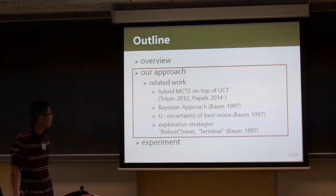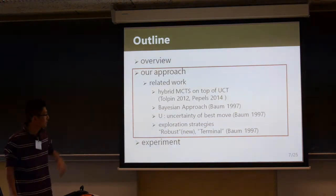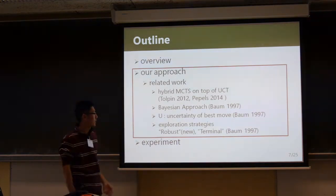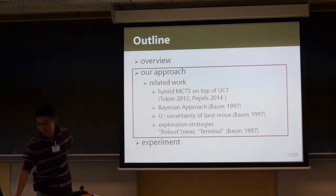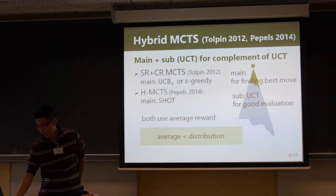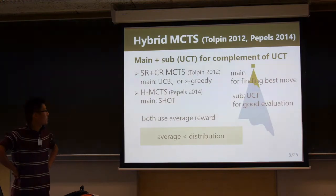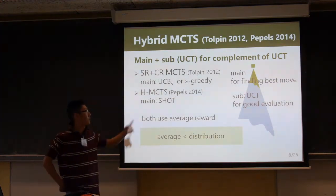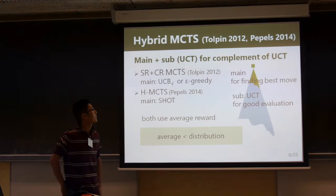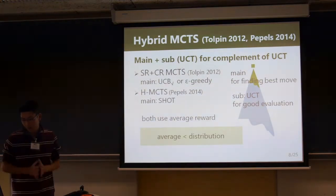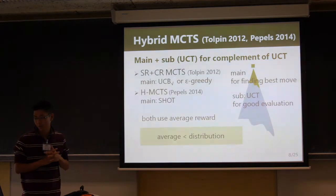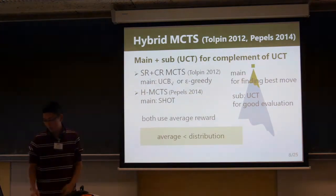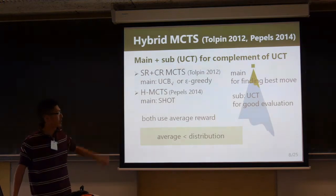I introduce our approach and related works: a hybrid MCTS and stage approach with a new value and exploration strategy. Hybrid MCTS is one variant of MCTS. It divides the search into intuitive parts: search by main strategy and search by sub-strategy. The aim of the sub-strategy and main strategy is respectively making good evaluations and finding best moves based on the evaluation.